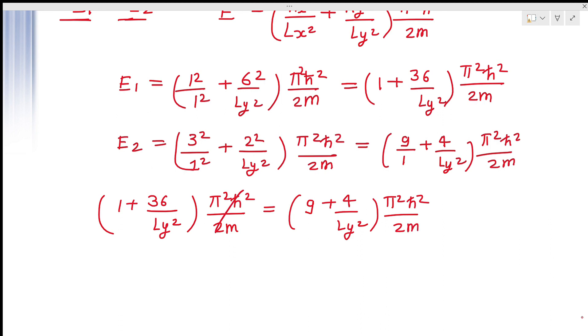So this will cancel out. So we are getting 1 plus 36 upon LY square is equal to 9 plus 4 upon LY square.